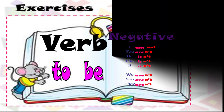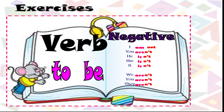The negative. Let's recapitulate the short forms: I'm not, you aren't, he isn't, she isn't, it isn't, we aren't, you aren't, and they aren't.